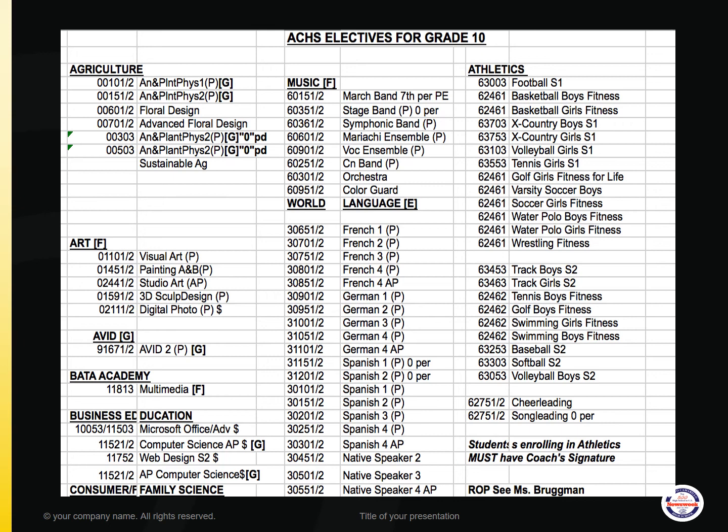Finally, the last column under Athletics — you will see all of the different sports offered by semester 1 and 2. Remember, students enrolling in Athletics must have a coach's signature. There are also some ROP or CEC courses that are open and may be available to you as sophomores. Please see Ms. Brugman for this information.